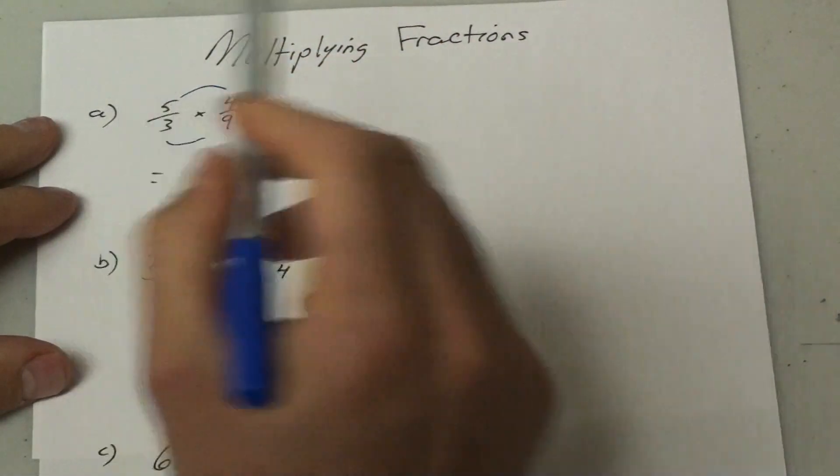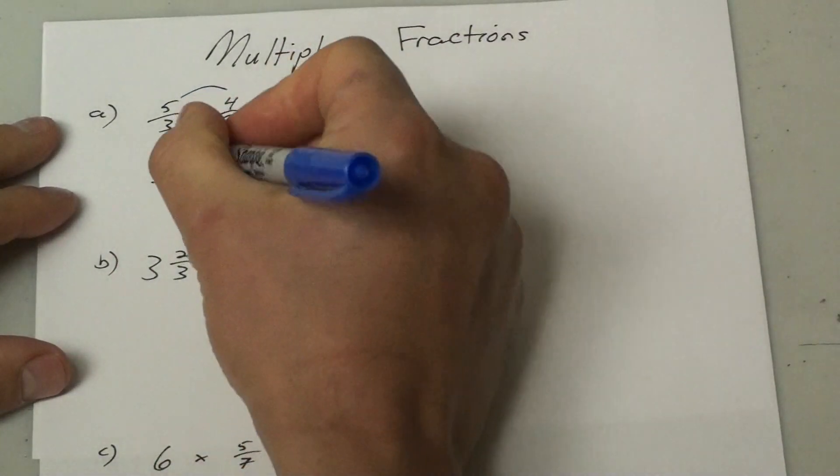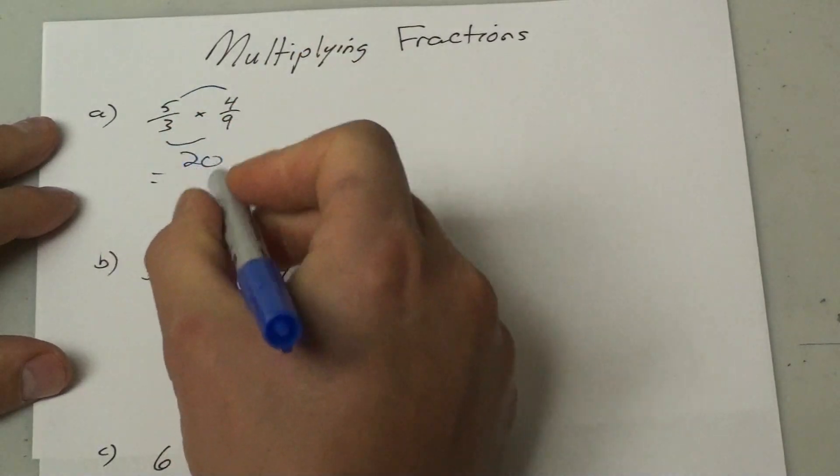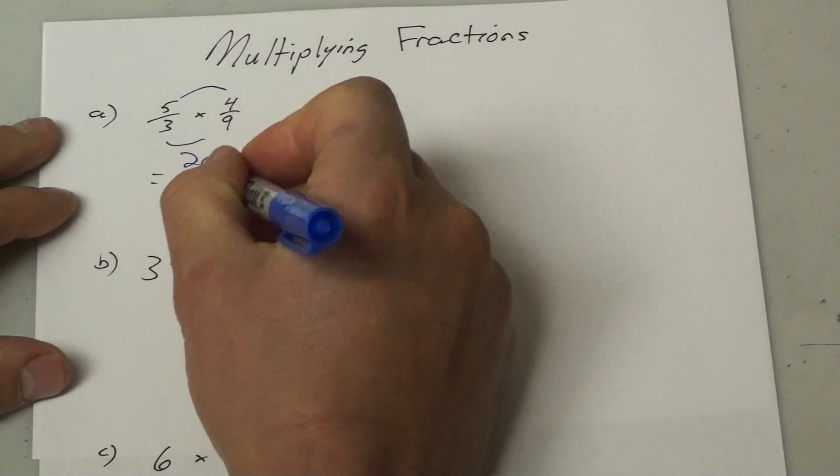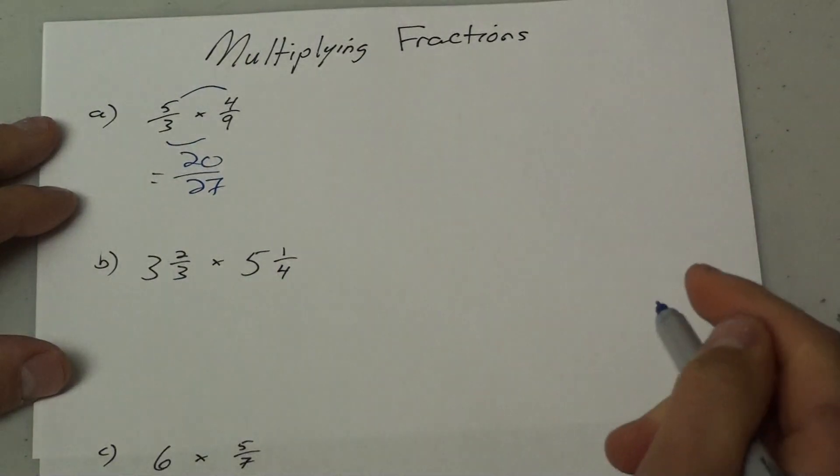So I'm going to multiply my tops together, numerators together. 5 times 4 is 20 and 3 times 9 is 27. And there is my answer, 20 over 27.